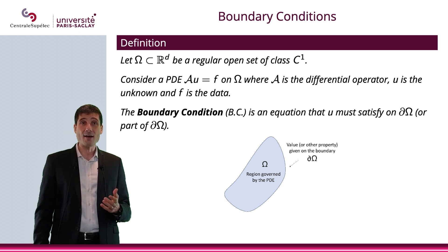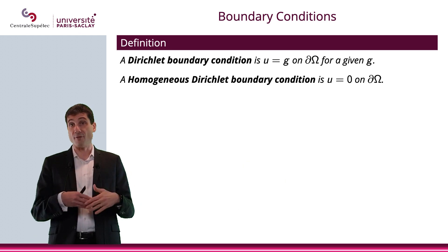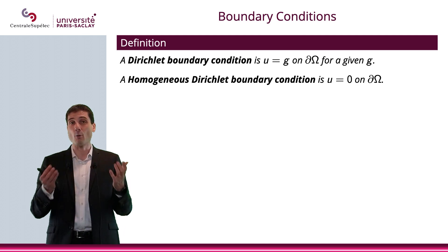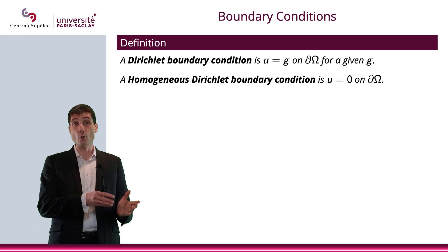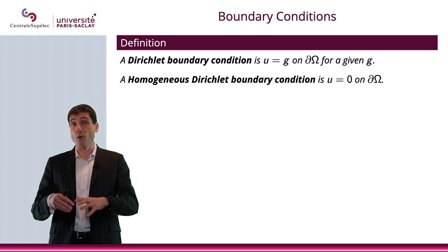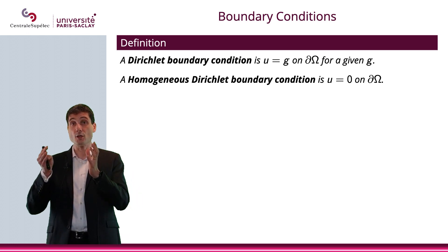You can have the Dirichlet boundary condition, which is probably a very simple boundary condition, a very simple equation to satisfy. It's U equals G on the boundary, or part of the boundary, for a given G.